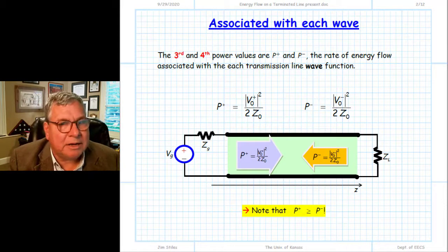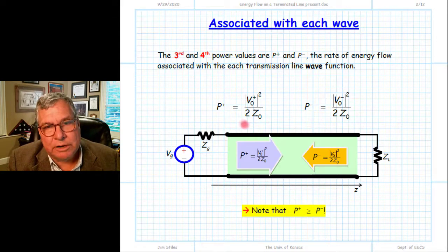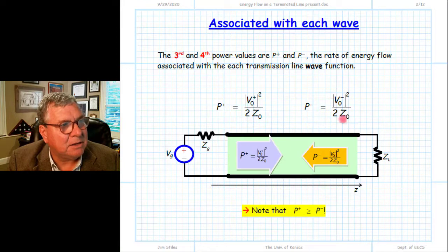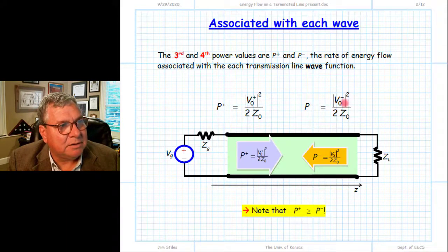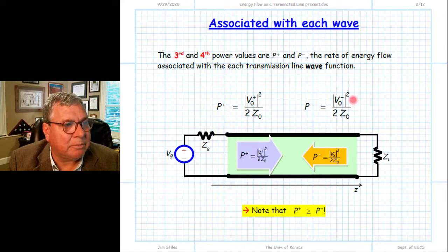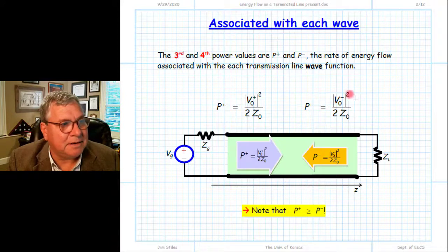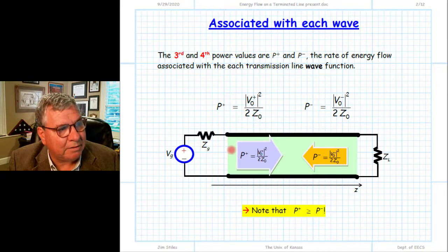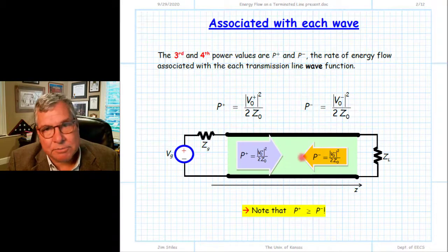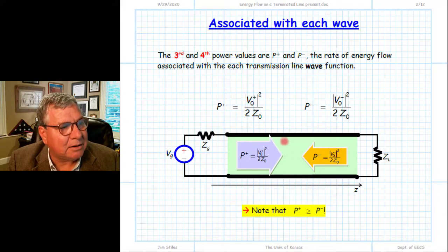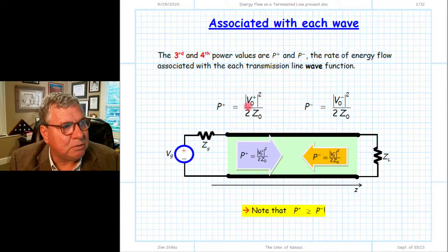Along the transmission line we earlier analyzed the rate of energy flow and found two terms: one associated with the plus-going electromagnetic wave and the other with the minus-going electromagnetic wave — P+ and P−. P+ is proportional to the magnitude squared of the complex wave amplitude V₀⁺, and P− is proportionally related to V₀⁻. The difference between these two is the net power flow across any point on our transmission line. At any port plane defined by position z, the rate at which energy is passing by is the net energy flow, which is the difference between these two.